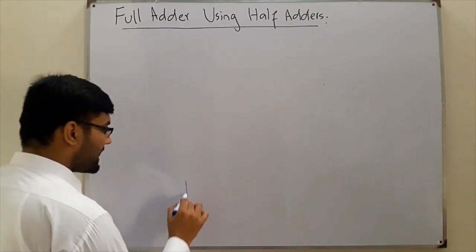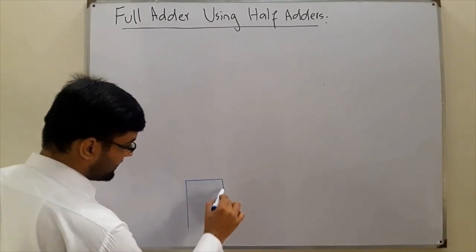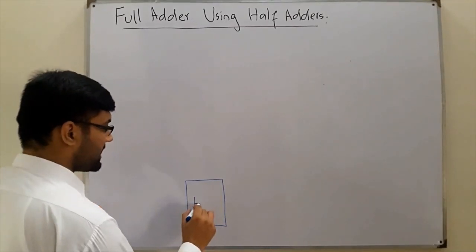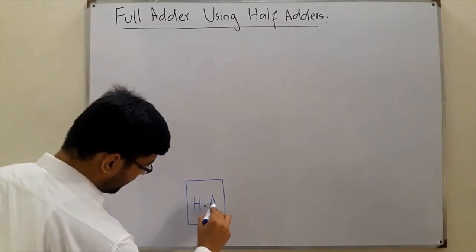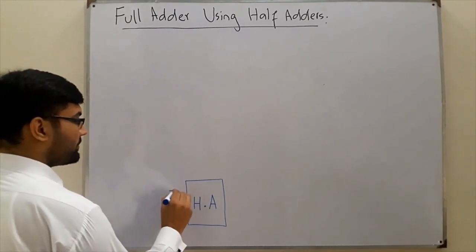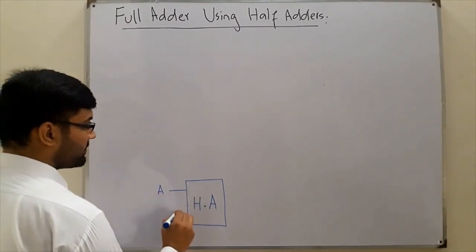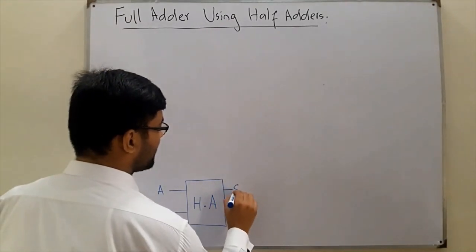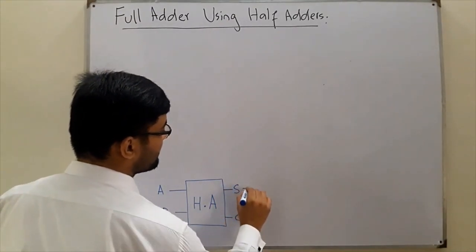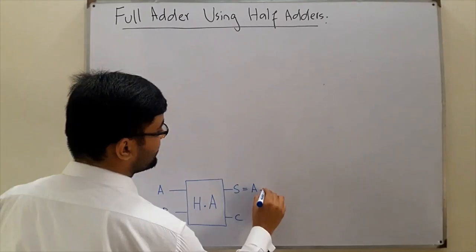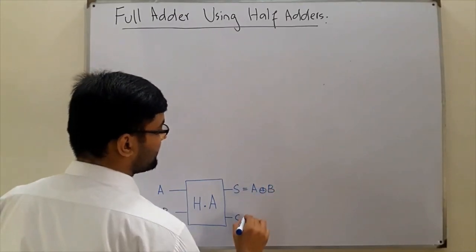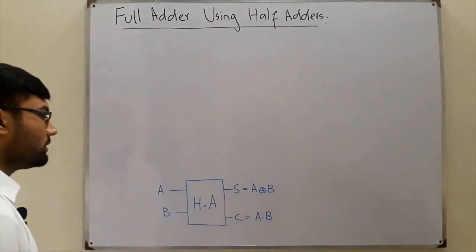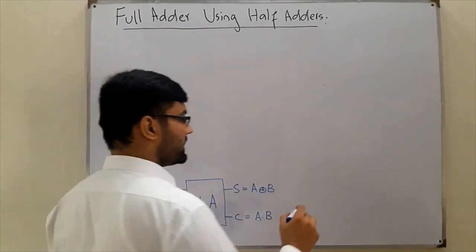If I have a half adder with inputs A and B, we have the sum and carry as outputs. The sum is A XOR B, and the carry is A AND B.